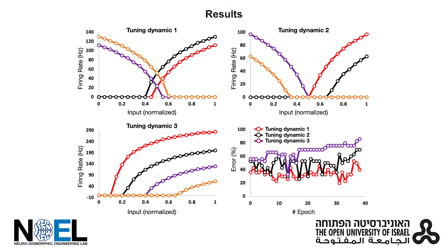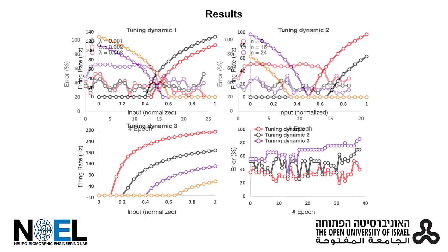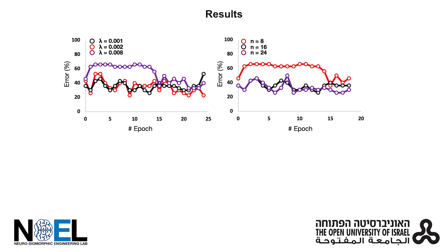Results show that the chosen tuning curve dramatically affects the system performance. We carried on with measuring the performance of the 60-neuron reservoir system with various learning rates and reservoir sizes.